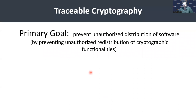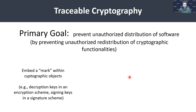The primary goal of traceable cryptography is to prevent unauthorized distribution of software, and this is done by preventing unauthorized redistribution of cryptographic functionalities. Typically, in such a scheme, we want to embed a mark within cryptographic objects. This can come in various forms — for example, decryption keys in an encryption scheme, signing keys in a signature scheme, and so on.